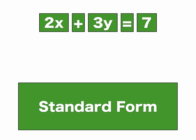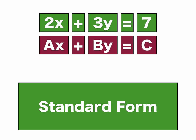So you have, in this case, you have 2x plus 3y equals 7. There's three parts to the standard form. There's the ax, which is whatever's in front of the x, in this case it's 2.